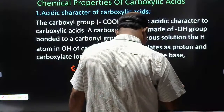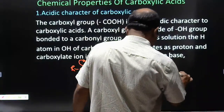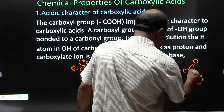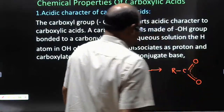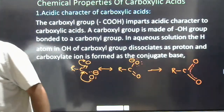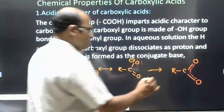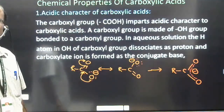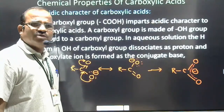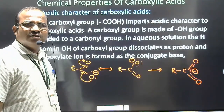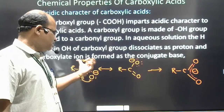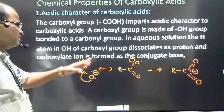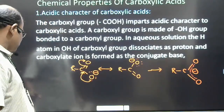The resonating structure is shown like this: R then C, here is O, here is O — such type of resonating structure is shown with the negative charge distributed across both oxygens, indicated in the middle. So R COO minus can be shown as two resonating structures written in this manner.